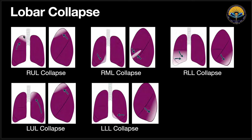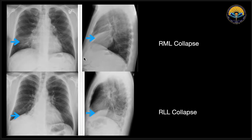In right upper lobe collapse the major fissure will move upward. In right middle lobe collapse the fissures go downward. In right lower lobe collapse the fissure shifts in its characteristic direction. For example, in this patient we can see some opacification that could be a collapse, and on the lateral view this is confirmed as right middle lobe collapse. There is also right lower lobe collapse confirmed clearly on the lateral X-ray.